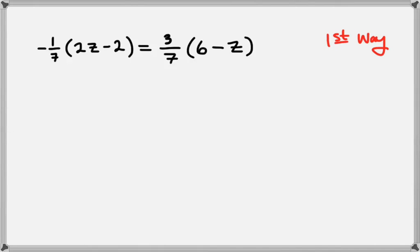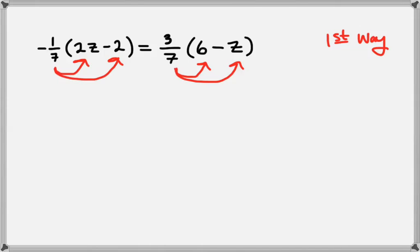Let's look at another one: negative 1 seventh times 2z minus 2, equals 3 sevenths times 6 minus z. There are a couple of ways we could do this problem. The first way is we could distribute the negative 1 seventh and the 3 sevenths and work the problem out that way, like we did on the previous problem.